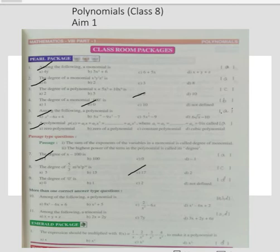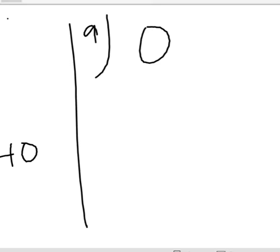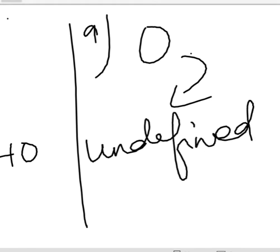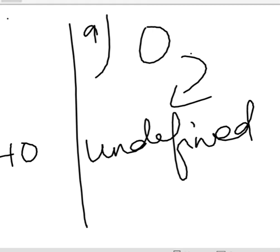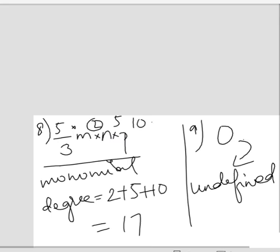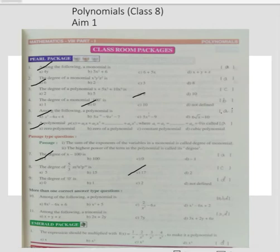Ninth question: what will be the degree of 0? We cannot take the degree of 0 — it is undefined. If we try X to the power 0, that is 1, and 0 times 1 is still 0, so we can't use that trick. The degree of 0 is undefined, option D.